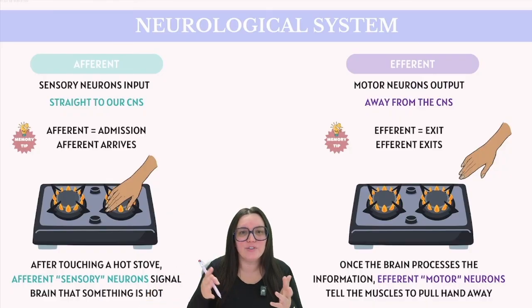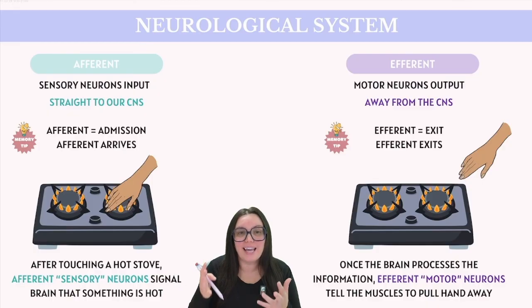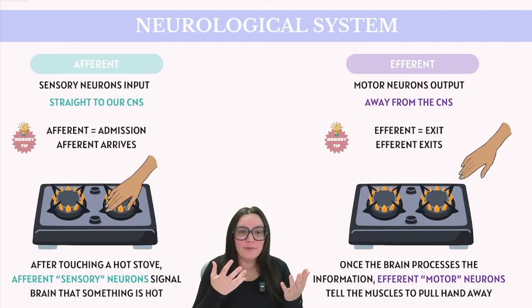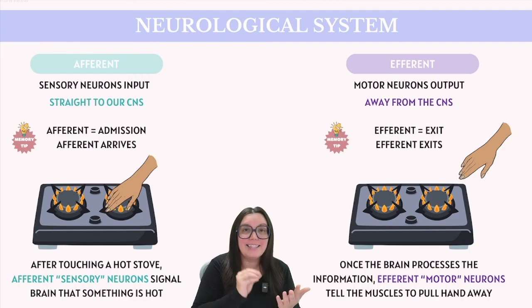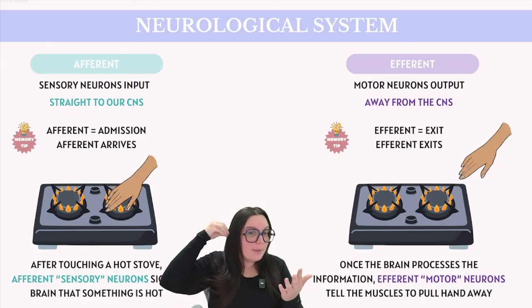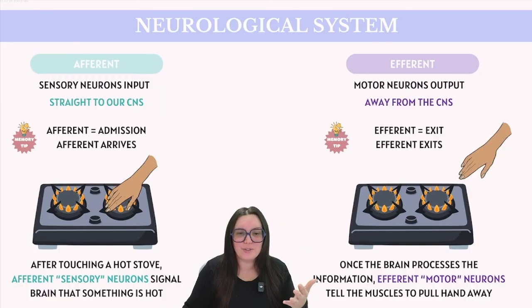Efferent neurons, known as motor neurons, carry signals away from the central nervous system to muscles and glands. A helpful phrase: 'efferent exits' — these neurons exit the brain and spinal cord to cause action to take place. Once the brain has processed information from afferent neurons about the hot stove, efferent neurons carry instructions from the brain back to the muscles of the hand, telling them to pull away. This is the motor response initiated by efferent neurons.